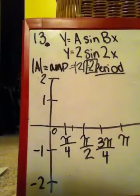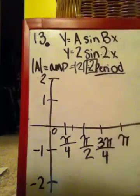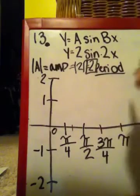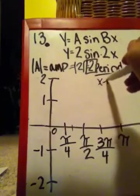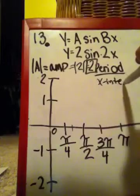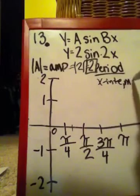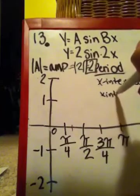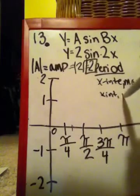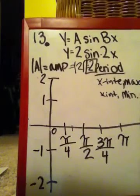Okay. Now that we have our graph all spotted out, we can now graph our points following the sine pattern. The pattern is our x-intercept, our maximum point, our x-intercept, our minimum point, and our x-intercept again.